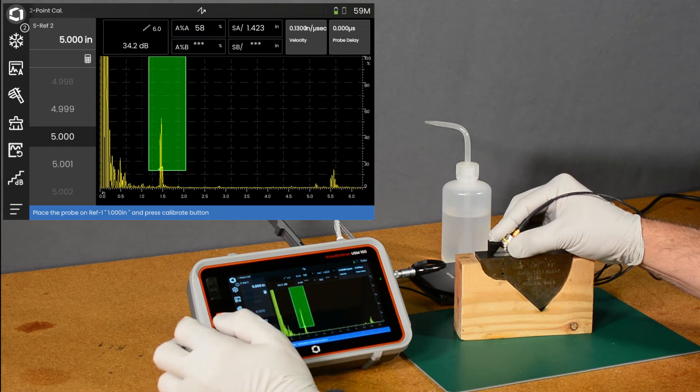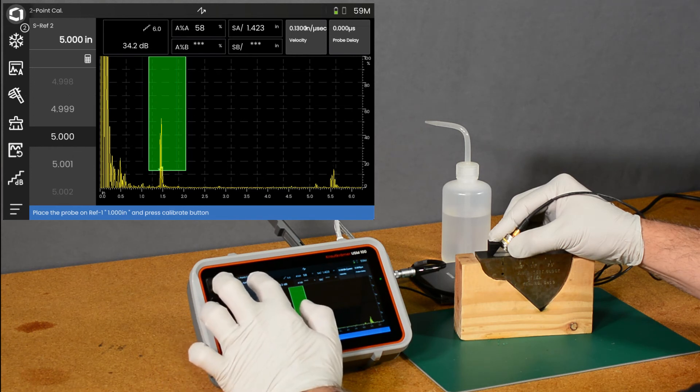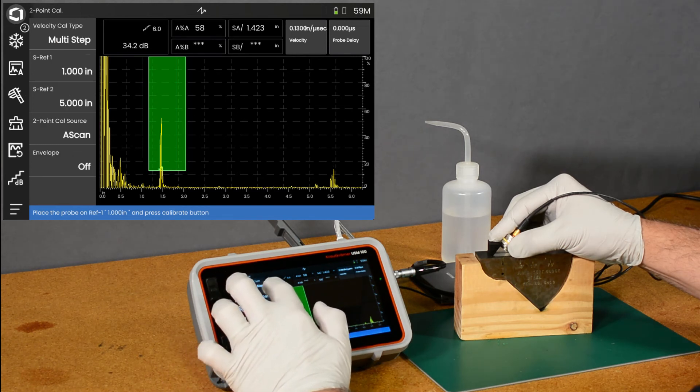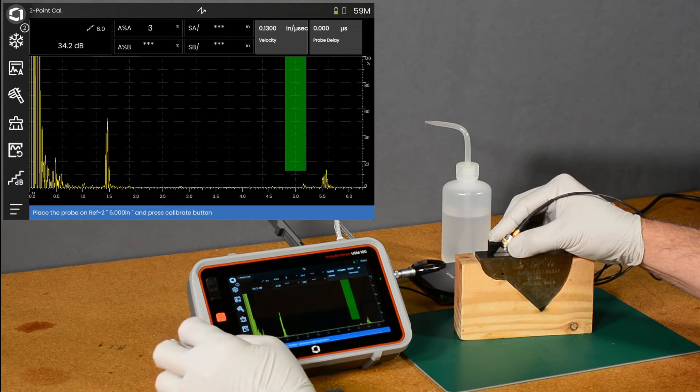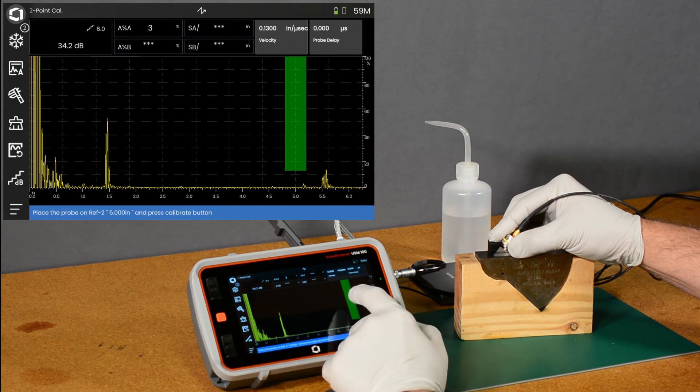All right. So now we can go ahead and do our calibration. Let's close that. Close that. Let's hit our Cal button. And it says, show me the 5-inch echo.